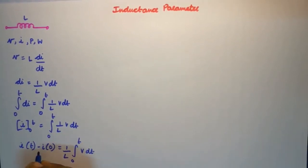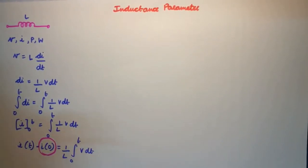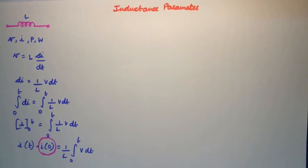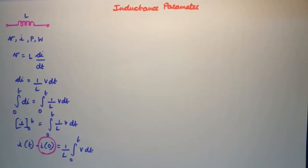Now what is this i of 0? I told you in the resistance parameter lesson that the resistor's job would start only after the supply is provided, whereas an inductor will absorb energy even though there is no voltage flowing through the circuit. So you need to consider the initial condition, the initial value of current which is i of 0.